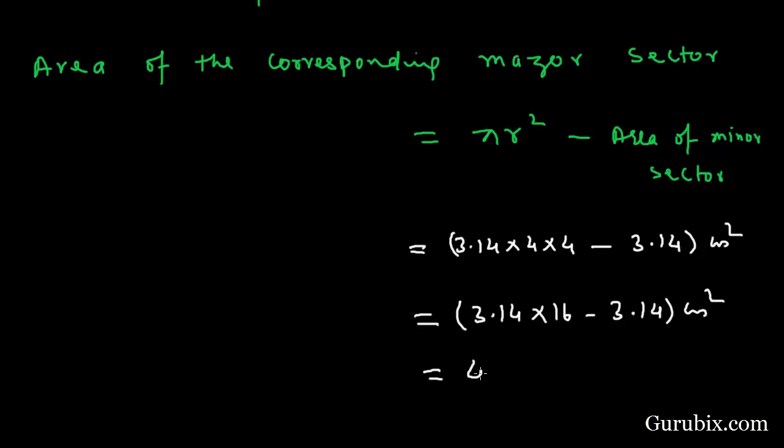So this equals 3.14 times 16 minus 3.14 centimeter squared. This equals 47.10 centimeter squared. So this is the solution of the example. Thank you.